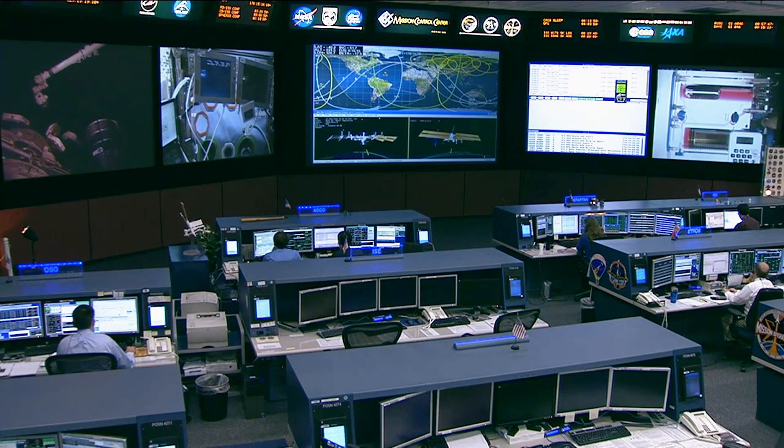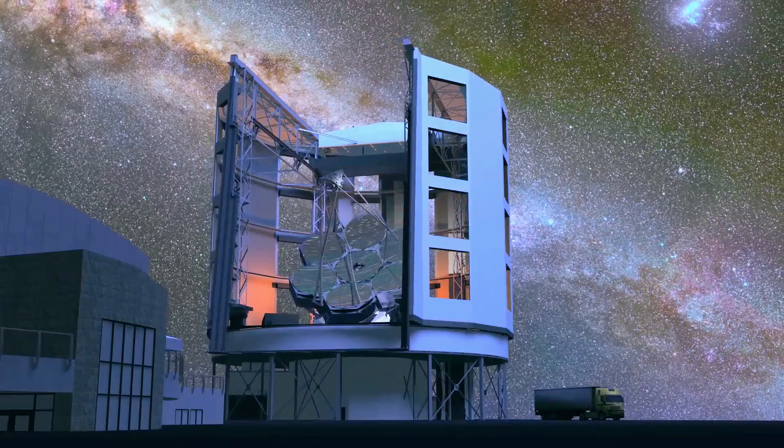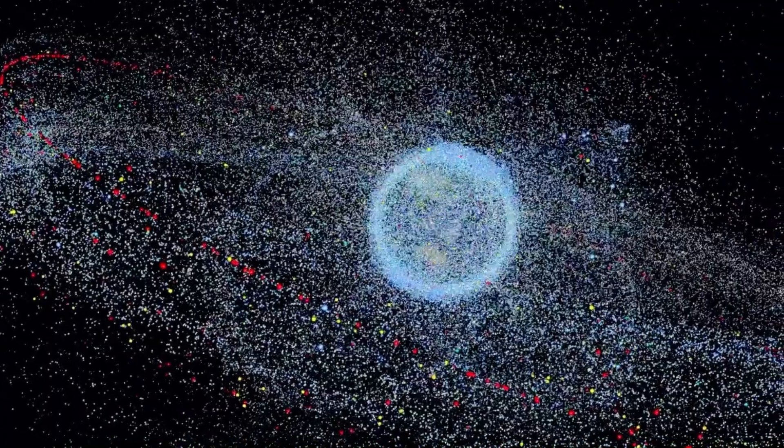Governments and space agencies are working on solutions, from better tracking systems to space debris removal missions. But until we find a way to clean up Earth's orbit, the next piece of falling space junk might be closer than we think.